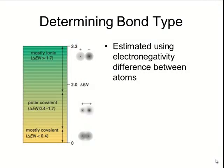In order to determine the type of bond involved in a compound, we estimate it using the electronegativity difference between atoms. If you look at an electronegativity table, the largest difference between atoms is going to be 3.3. This is because fluorine has the highest electronegativity and cesium has the lowest electronegativity, so the maximum difference in electronegativity between atoms will be 3.3.